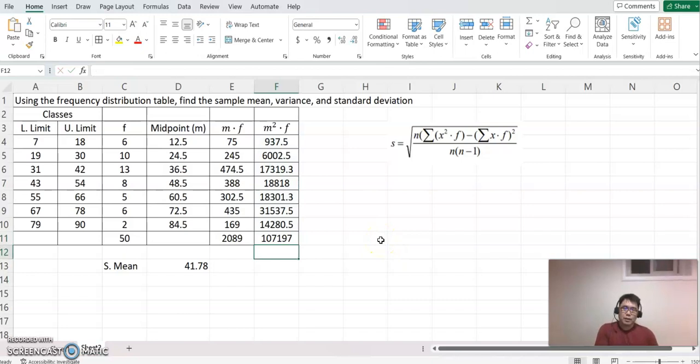Now we are ready to find the variance and standard deviation for this sample data. When you look at n, n means total number of data, which is 50. Sum of x square times f means in this table m square times f. This sum here, which means this value. I'm going to highlight which values we are using: these three values.